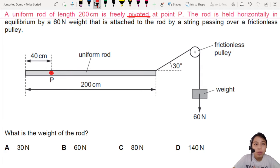And it is held horizontally in equilibrium, which means there is no net force, no net moment, or no net torque. Thanks to a 60 N weight, and that's it. So don't forget, there's a weight of the rod, which is acting somewhere. Usually, we say if it's a uniform rod, like this thing here.